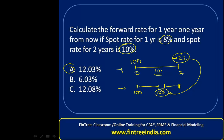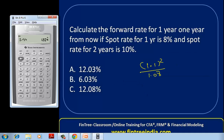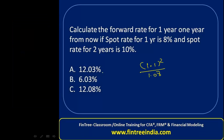The third approach is the formula method: (1.1)² divided by 1.08, minus 1, multiplied by 100. Calculating 1.1 squared divided by 1.08, minus 1, times 100 gives us again 12.04%, confirming that the answer is option A.